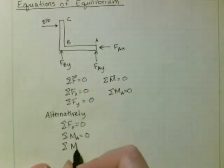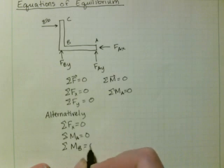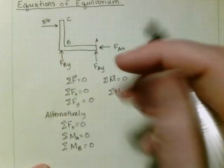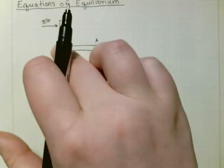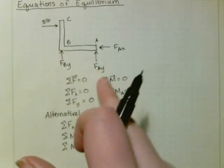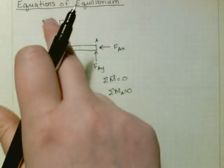And then we could also do the sum of the moments about point B is equal to 0. So instead of summing the forces in the y direction, we then sum the moments about the B direction and about B. Fax would go through, so that wouldn't form a moment, and then it would just be Fay and the 8 pounds.